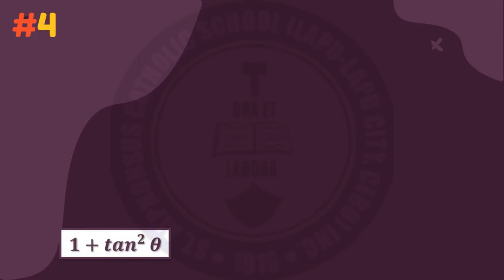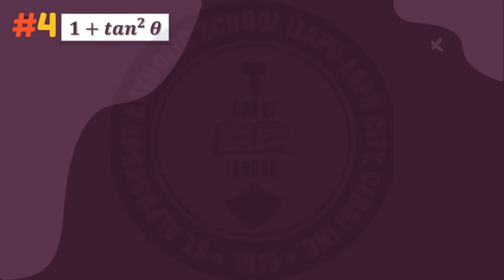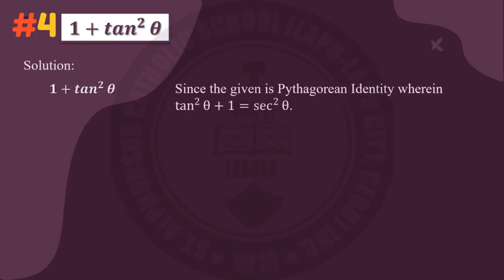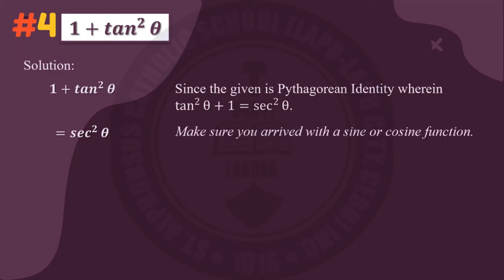Number four: one plus tangent squared theta. Since the given is a Pythagorean identity where tangent squared theta plus one equals secant squared theta, we need to continue simplifying to arrive at sine or cosine functions. Remember, secant is equivalent to 1 over cosine. Since this is squared, our answer will be 1 over cosine squared theta.